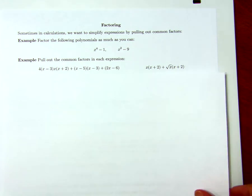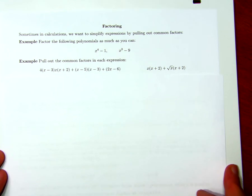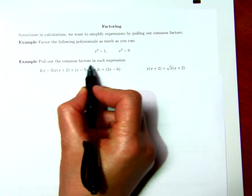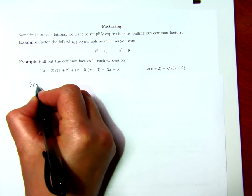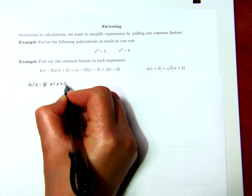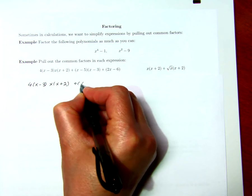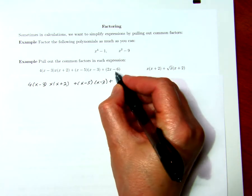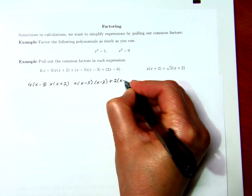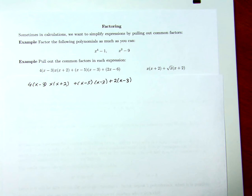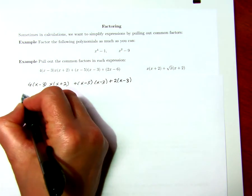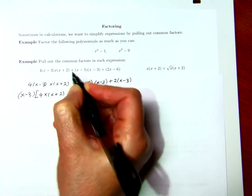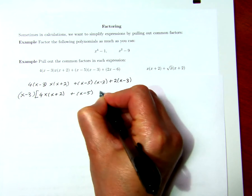Another trick you need to be able to do when factorizing is to pull out common factors. Here we want to pull out a common factor from this expression, and we see that x times x minus 3 is common to the first two terms, but the last term it's hidden in the term itself. So we have to pull out a 2, and we see that's 2 times x minus 3. Now we can pull an x minus 3 out of each term, so this is x minus 3 times 4x times x plus 2 plus x minus 5 plus 2.